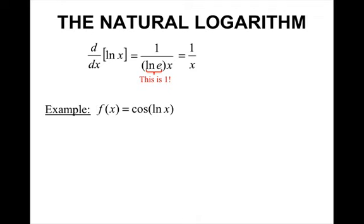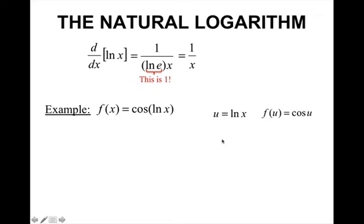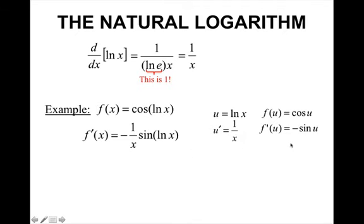Let's do an example where you have to take the derivative of the natural log of x. Take the derivative of cosine of the natural log of x. I'm going to have to use the chain rule. My inner function is the natural log of x, and my outer function is cosine u. The derivative of the natural log of x is 1 over x. The derivative of cosine is negative sine. So multiply them together and replace u with the natural log of x.